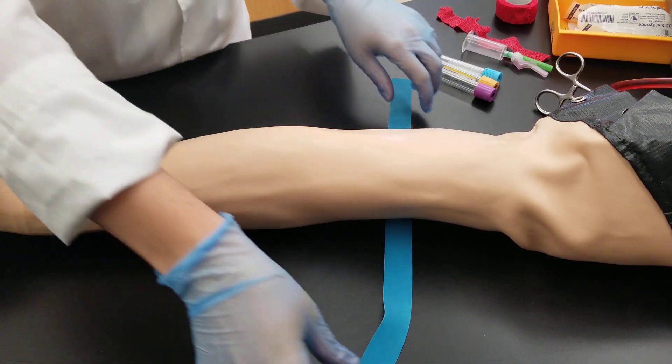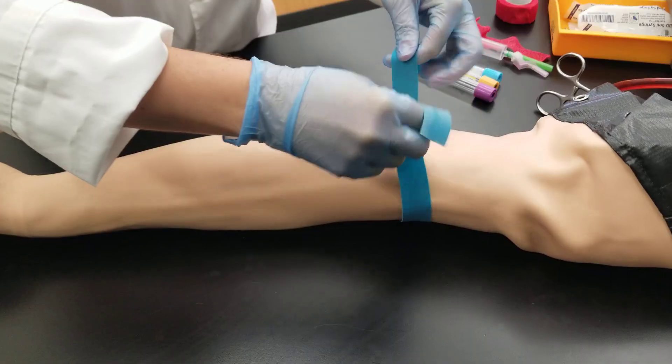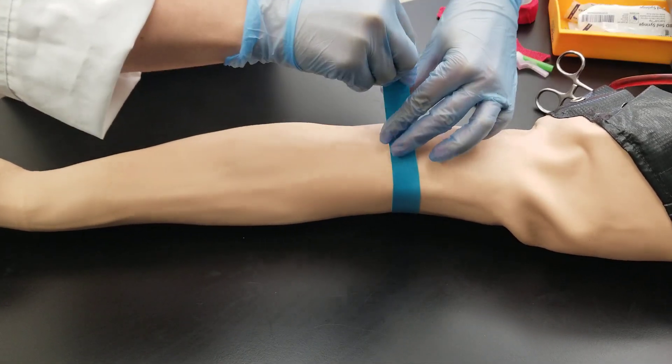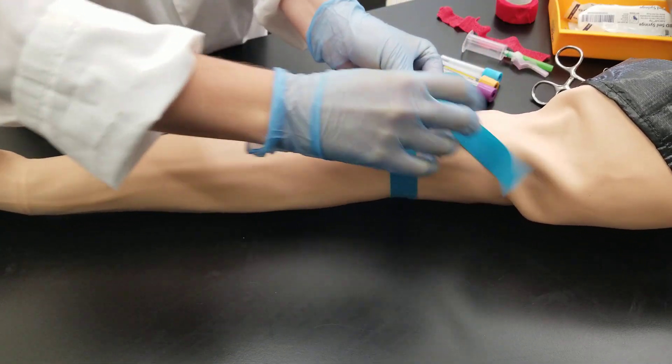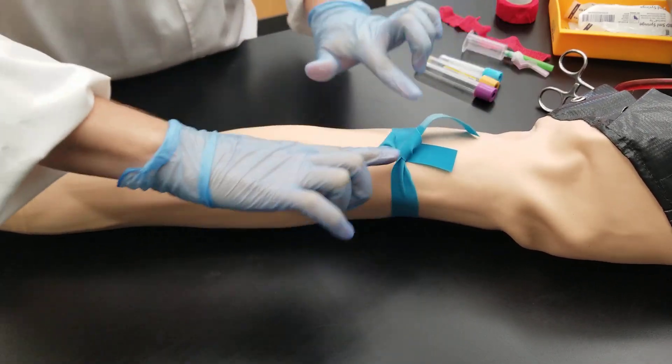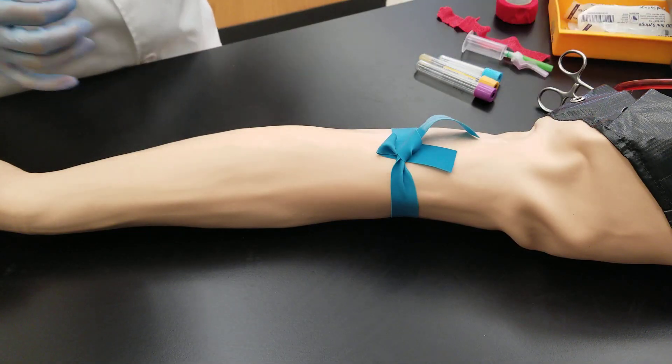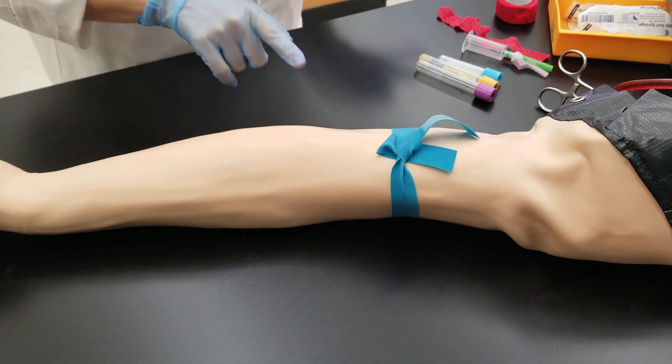And now I'm going to reapply the tourniquet. So we are above the draw site, which is three to four inches above the draw site. We're keeping our tails of the tourniquet up towards the patient's arm. We already cleansed the area.